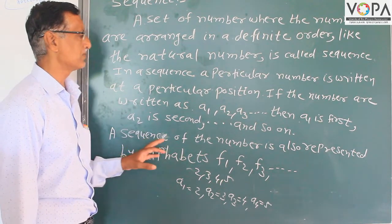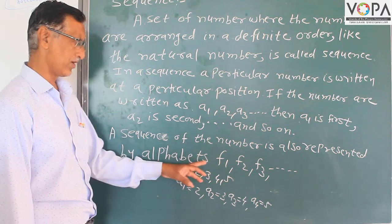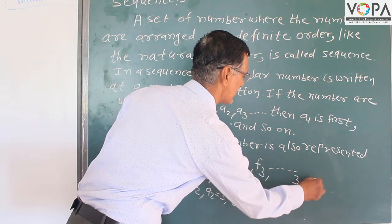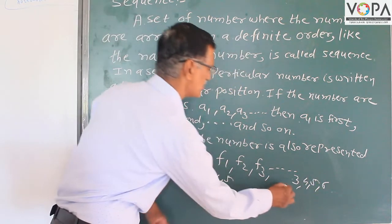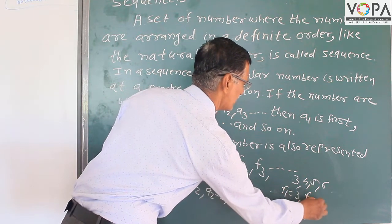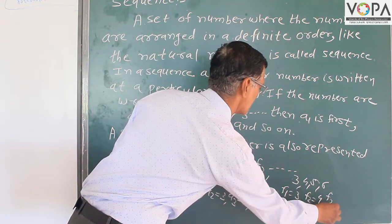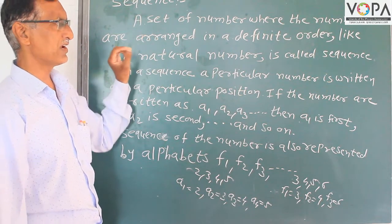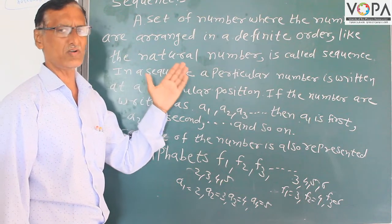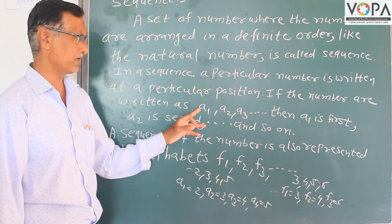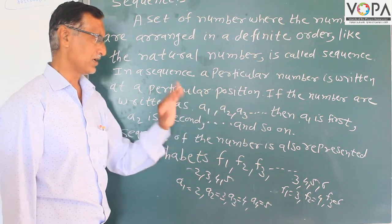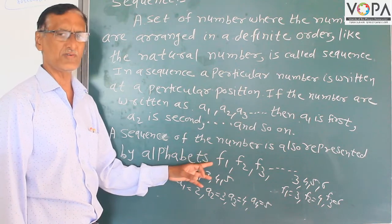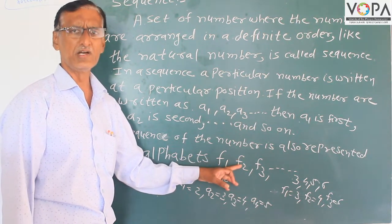Similarly, a sequence of numbers can also be represented using the alphabet f1, f2, f3. For example, the sequence 3, 4, 5, 6 gives f1 equals 3, f2 equals 4, and f3 equals 6. In this type of sequence, the set of numbers is aligned in a definite order. f1 is the first number, f2 is the second number, and f3 is the third number.